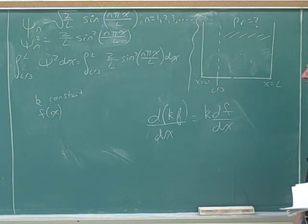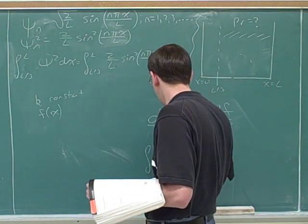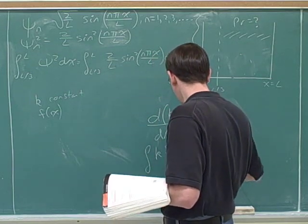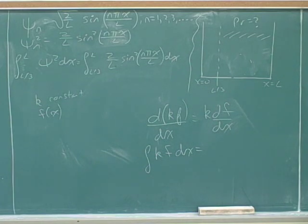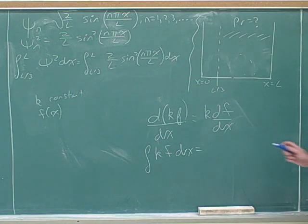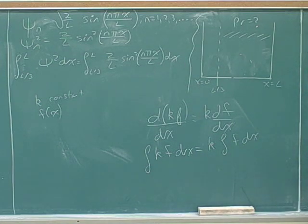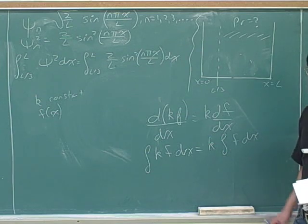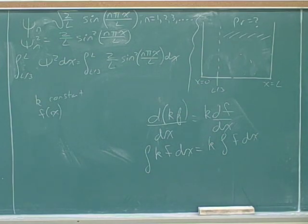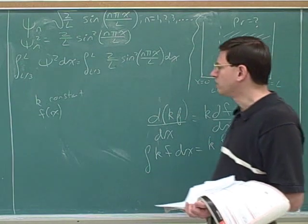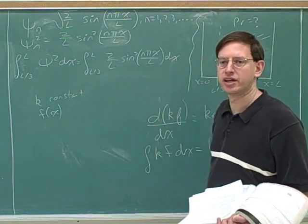Here we can just take this constant out of this expression. Similarly, we can use a similar trick to simplify this integral. Again, k is a constant and f is a function of x. So it's the same trick. We can take constants out of integrals. This is a trick that's actually come up quite a bit in this semester of the course. We can take a constant out of a derivative or an integral and that will help us to simplify things.